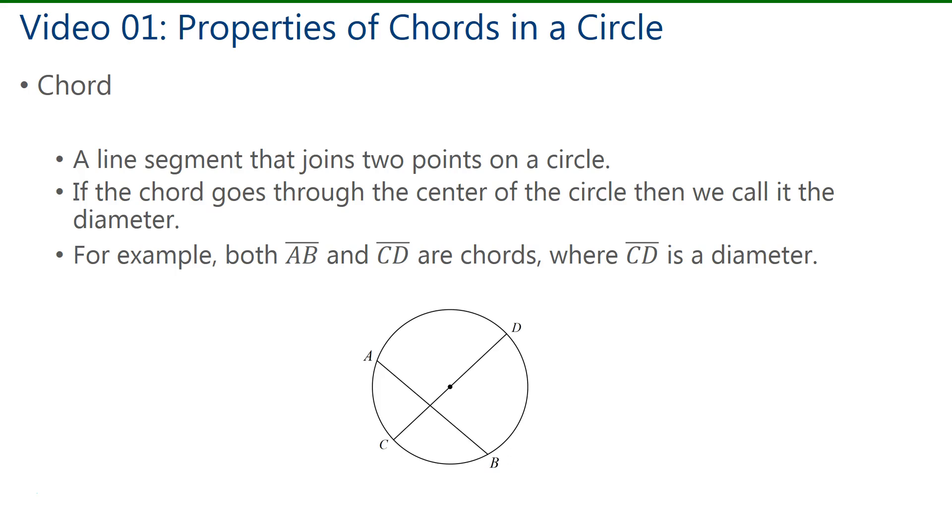A chord is a line segment that joins two points on a circle, and if the chord happens to go through the center of the circle, then we call it the diameter. So the diameter is just a special chord. For example, line segment AB and line segment CD are both chords, and since CD passed through the center of the circle, then we call that a diameter.